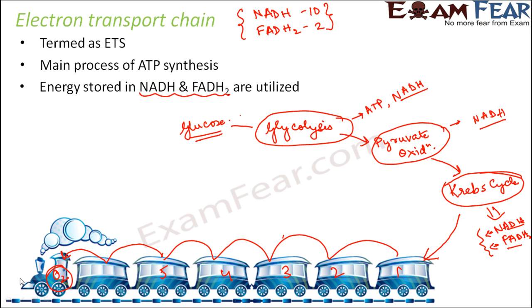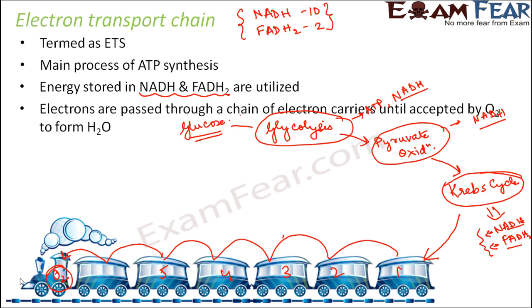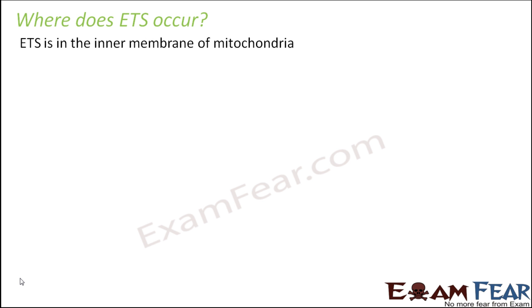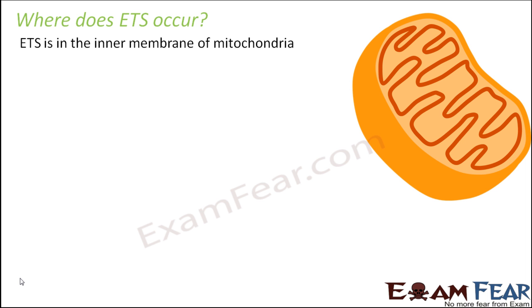We will see exactly how that happens in the next few slides. Electrons are passed through a chain of electron carriers until accepted by oxygen — the final electron acceptor — to form water. As for where the electron transport system occurs: glycolysis happened in the cytoplasm, while Krebs cycle and pyruvate oxidation happened in the matrix of the mitochondria. Since mitochondria is the powerhouse of the cell, ATP synthesis happens there — and more precisely, in the inner membrane of the mitochondria.